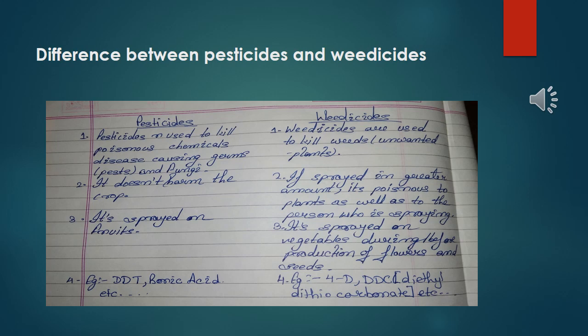Let's discuss the difference between pesticide and weedicide. Point one: pesticide is used to kill poisonous chemicals, disease-causing germs, pests, and fungi. Weedicide is used to kill weeds — unwanted plants which grow along with our crop. Point two: pesticide does not harm the crop. For weedicide, if sprayed in greater amounts, it is poisonous to plants as well as to the person who is spraying.